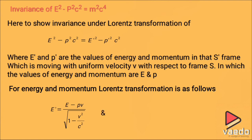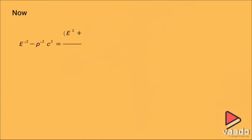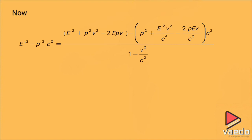For momentum, we write p' = (p − Ev/c²) / √(1 − v²/c²). The next step is to substitute these expressions for E' and p' into E'² − p'²c², which gives E² + p²v² − 2Epv − p²c² + E²v²/c² − 2pEv multiplied by c².